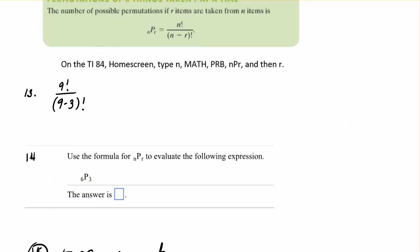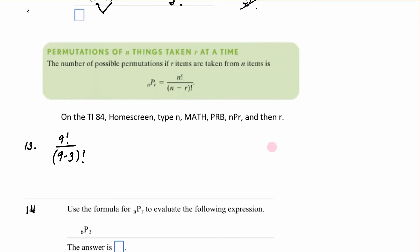All right. This is an important formula. The permutations of a certain number of things taken r at a time. Now order still matters. But this is the number of possible permutations if r items are taken from n items. So say you have 10 books and they want to know how many different ways you can put 5 of those books on a shelf. And order matters. Or if you have the entire alphabet, how many different ways can you take 5 letters? Where order matters. So this is coming up.